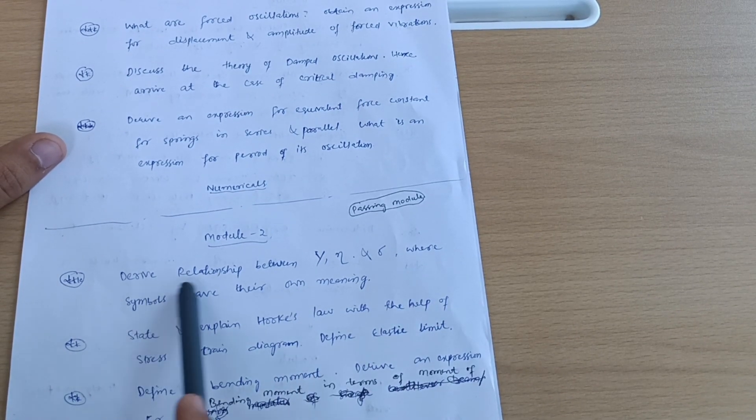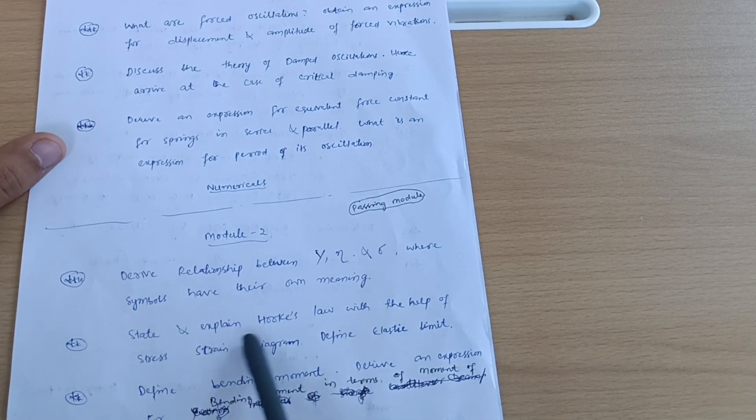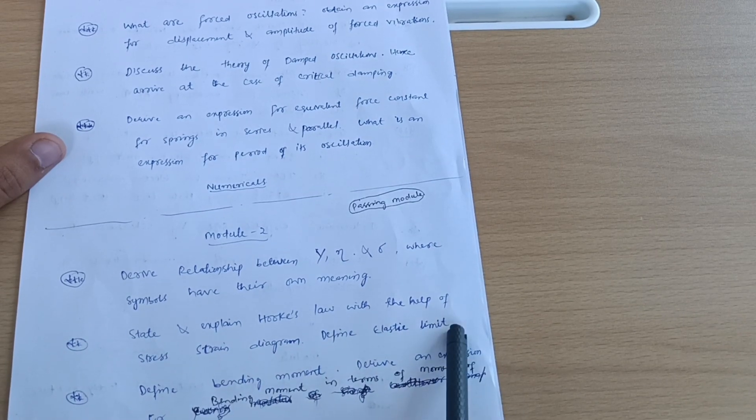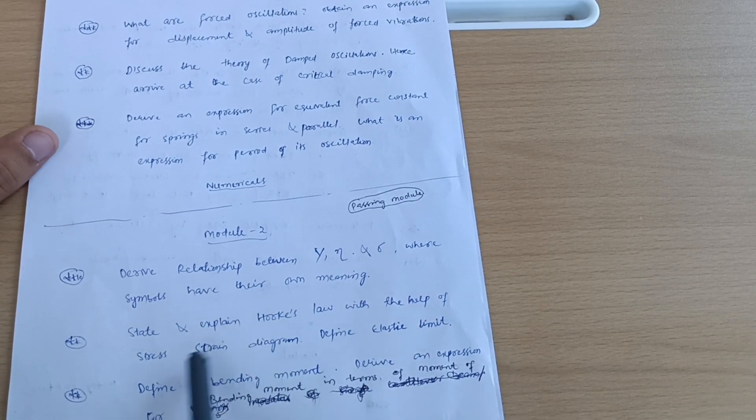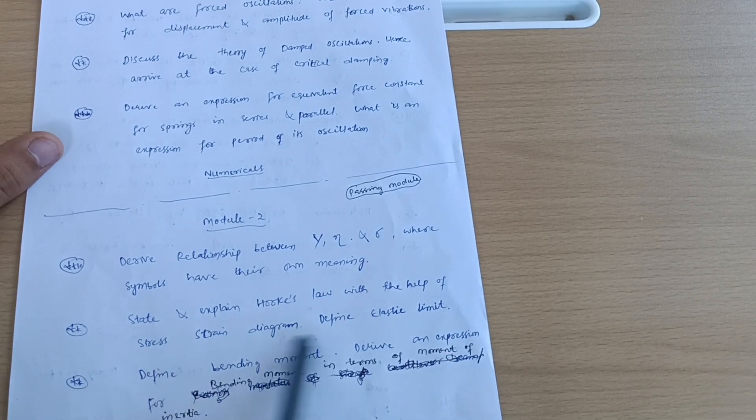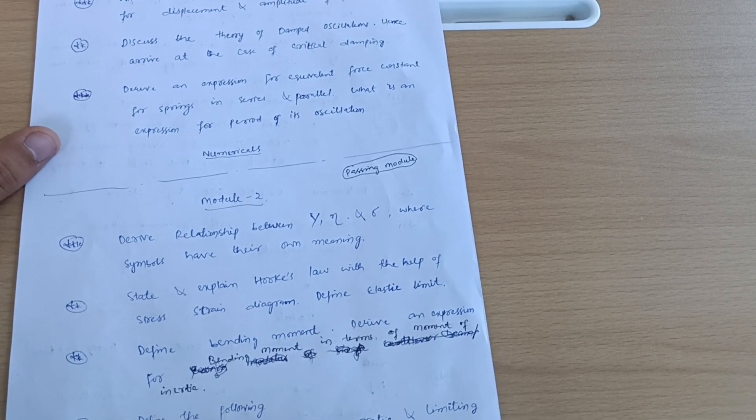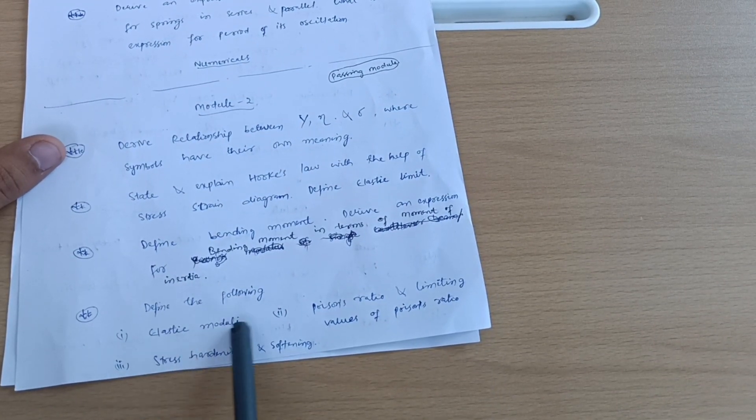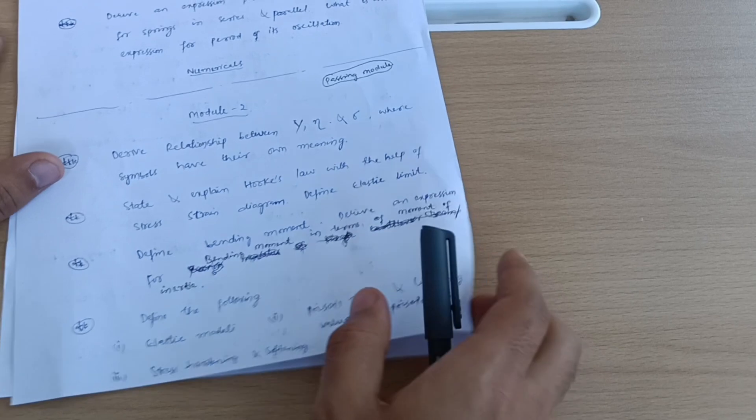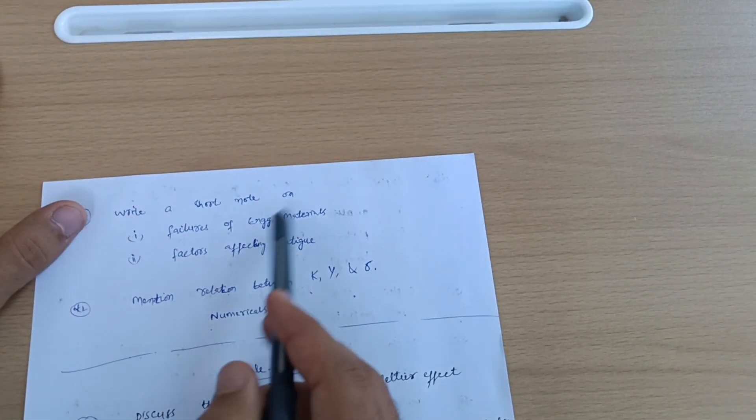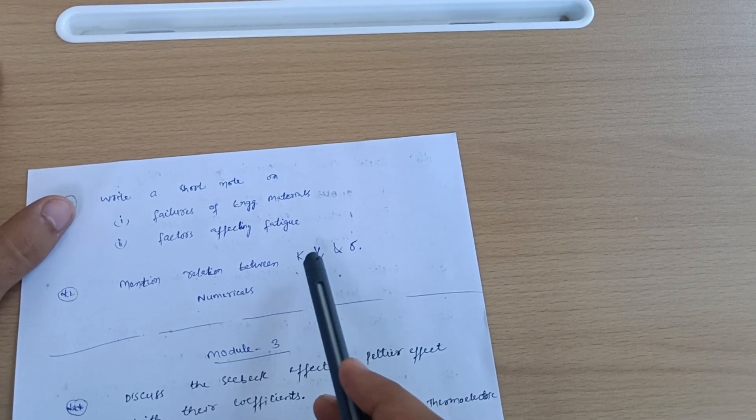Next passing module is Module 2. The super important question is: derive the relationship between Young's modulus, rigidity modulus and Poisson's ratio where symbols have their own meaning. State and explain Hooke's law with the help of stress-strain diagram, define elastic limit. You should go through this stress-strain curve also separately, not only with Hooke's law. Sometimes they will separately ask you to draw the stress-strain diagram. Define bending moment, derive an expression for bending moment in terms of moment of inertia.